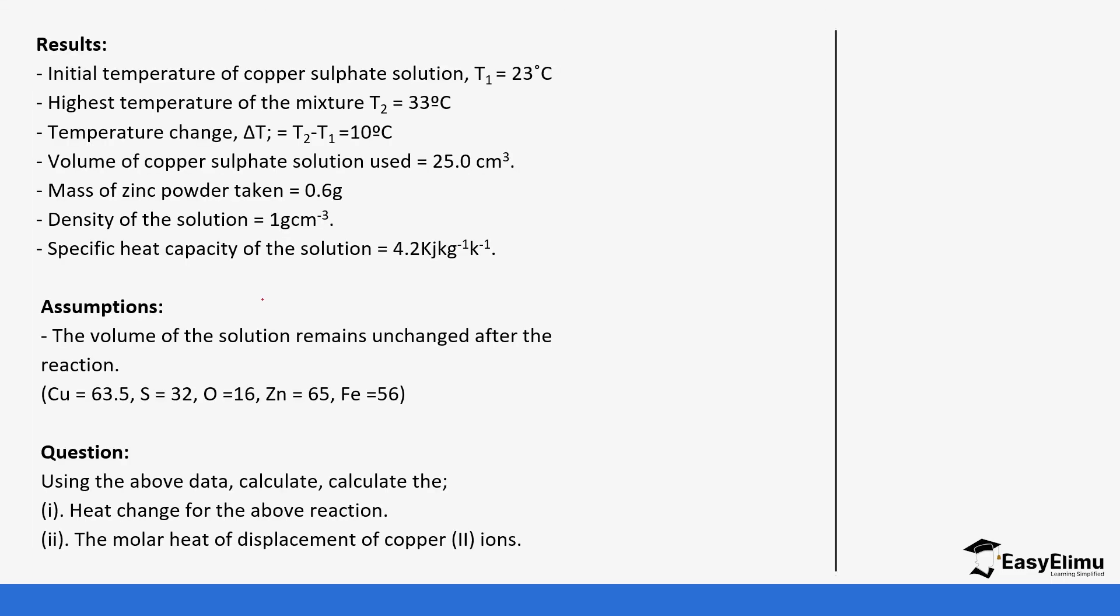So for example, in the reaction we just did, the results were shown above and then we can answer this question. So the initial temperature of copper sulfate was 23°C. The highest temperature was 33°C. So the temperature change was 10°C. And then the volume of copper sulfate used was 25 cm³.